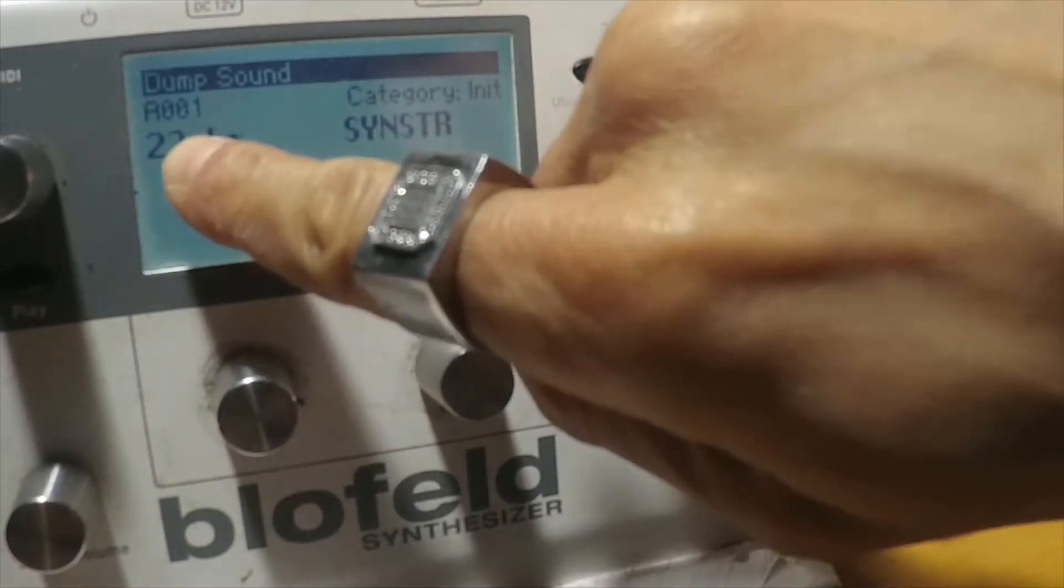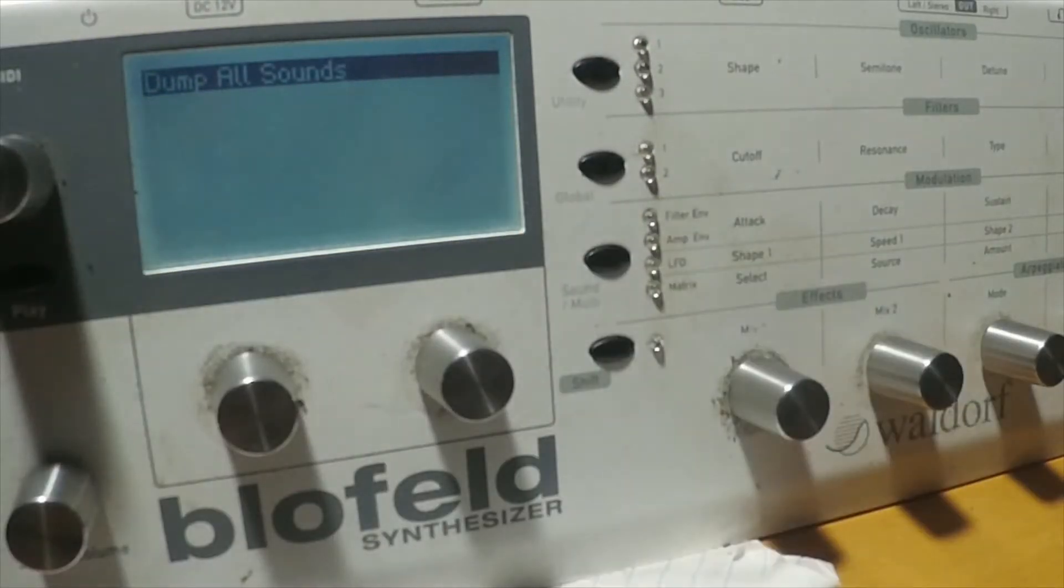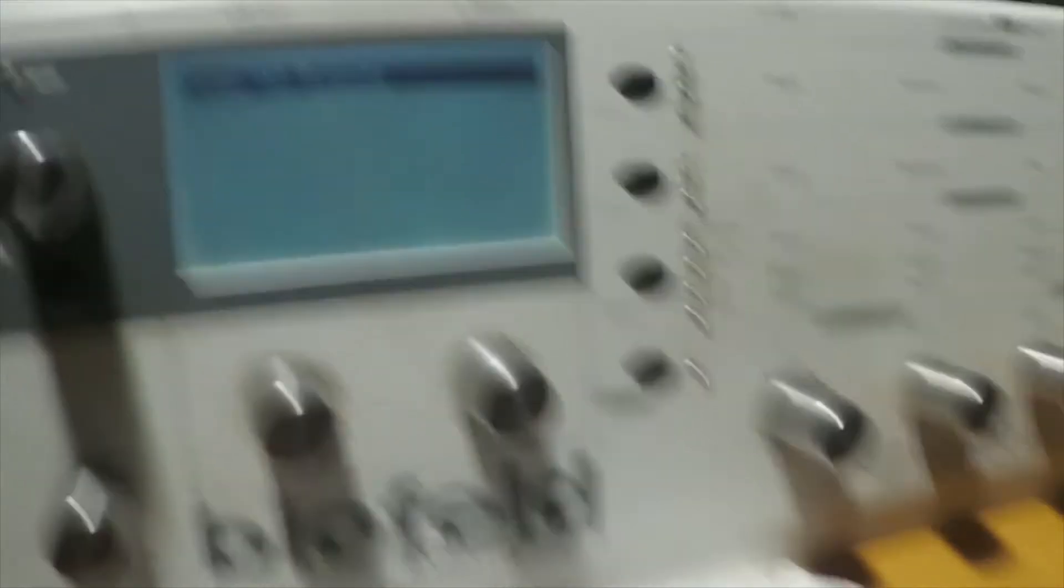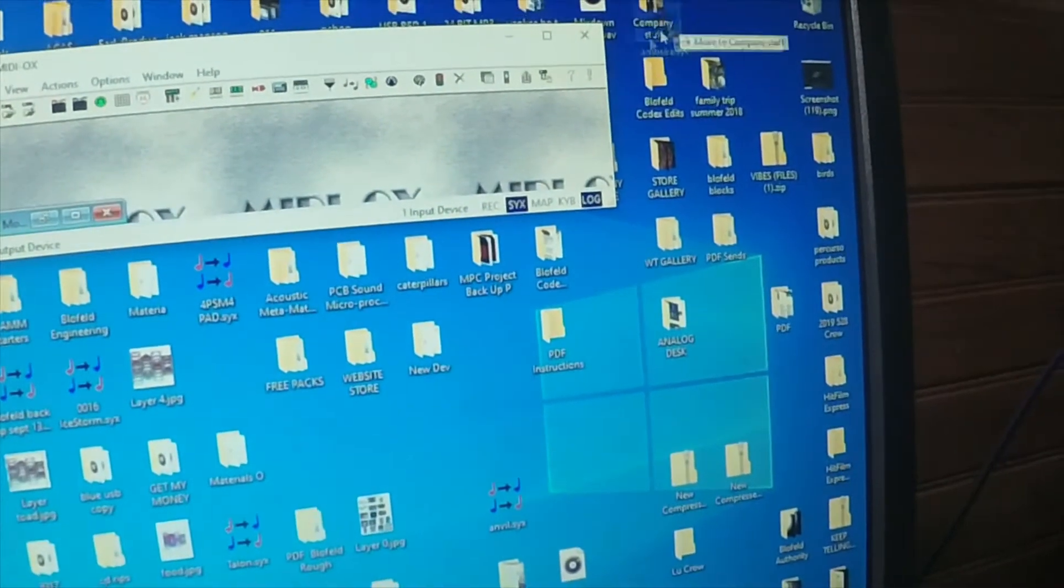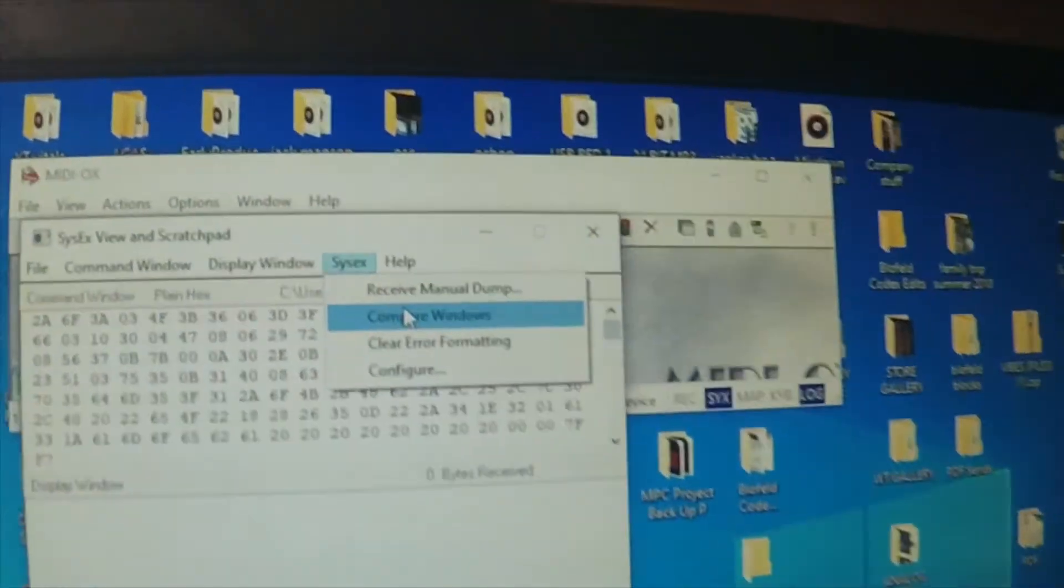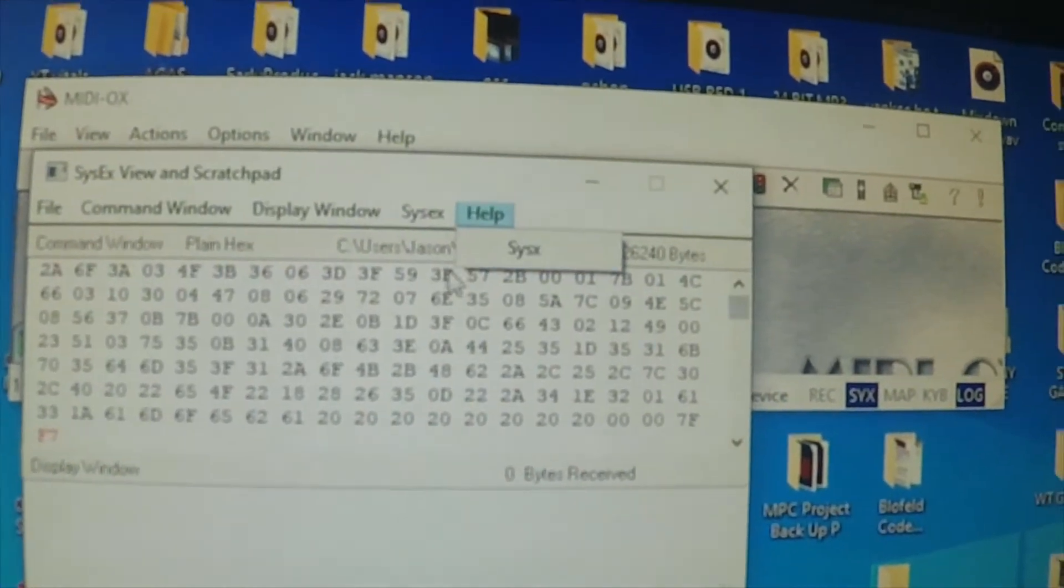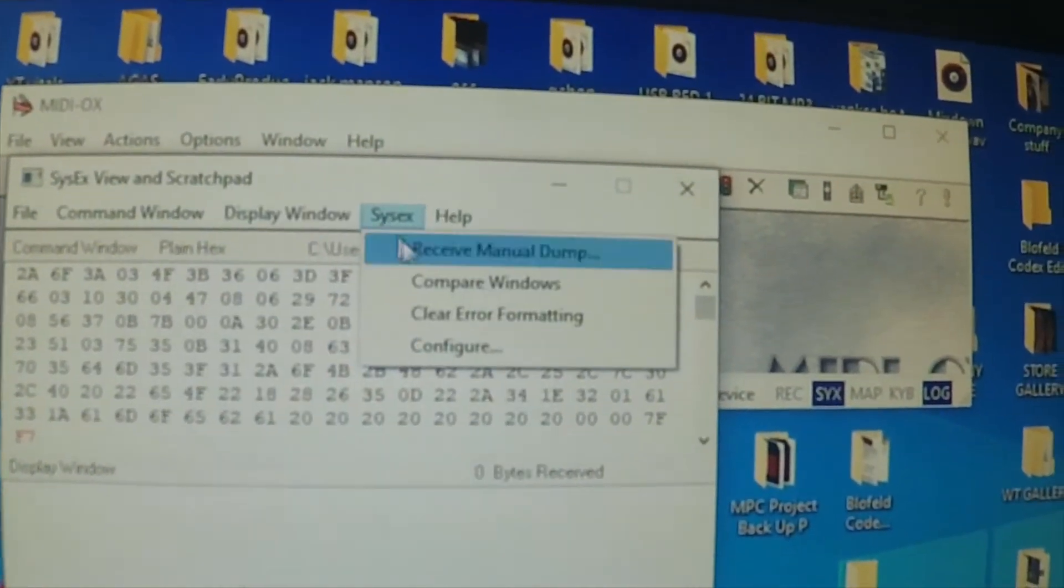This is going to dump A001 if it's on Dump Sound. Dump All will dump your entire Blofeld. So what you're going to do is pull up MIDI OX. I need a scratch patch, so I'll just drag any sound in there. You go up to the SysX tab right here and click Receive Manual Dump.